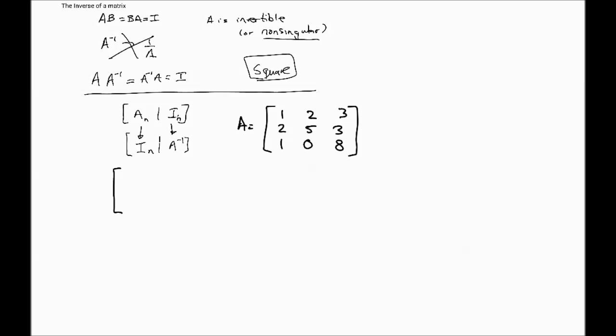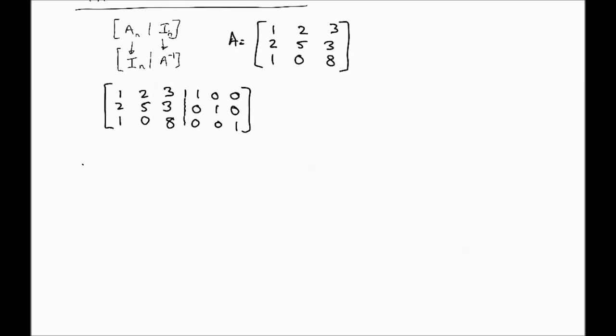Let's look at an example. Starting with matrix A, the first step is to write matrix A and augment it with the appropriate identity matrix. This particular example has been adopted from Howard Anton. Our objective is to take the matrix on the left-hand side and convert it to the identity matrix. Our first row operation will be R2 = -2R1 + R2, keeping R1 unchanged, and R3 = -R1 + R3.